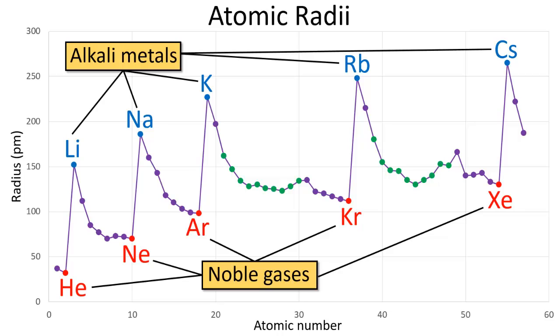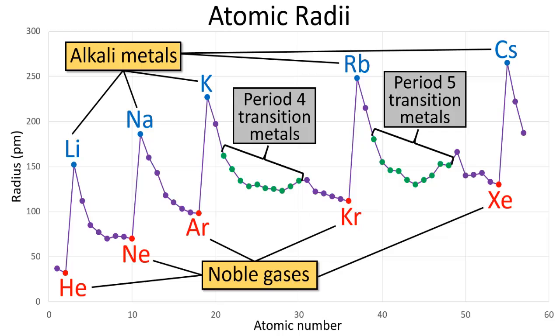Then it starts to climb downward slowly again, and the pattern continues over and over. The elements represented by green dots are the transition metals, and we can see that there are places where the pattern is not followed exactly.